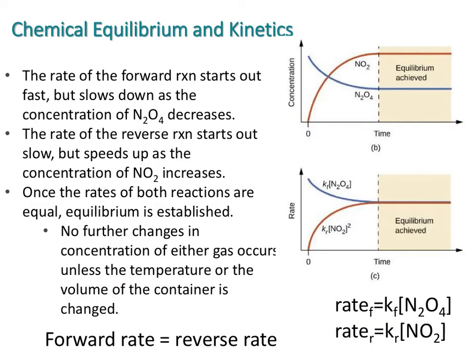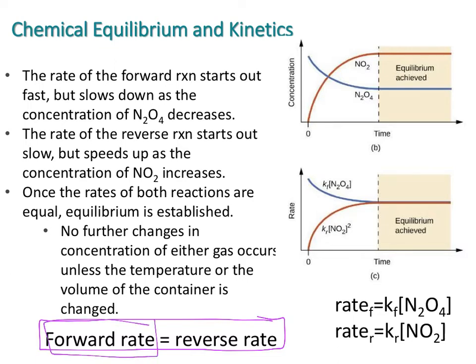Let's relate equilibrium to what we learned about kinetics in the previous chapter — what affects the time it takes for reactions to occur. The connection is this: at equilibrium, your forward rate is equal to your reverse rate. The rate at which products form equals the rate at which reactants are reformed, because the reaction is reversible. These are the rate laws for both the reactant and the product.